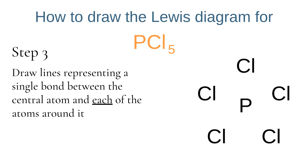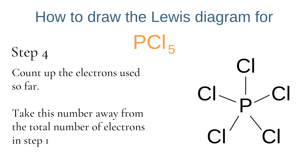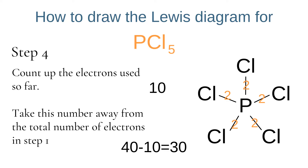The next step is to draw a single line, representing a single bond, between the central atom and each of the surrounding atoms. Each single bond represents 2 electrons. We then count up the number of electrons used so far and subtract this from the total counted in step 1. Because each single line represents 2 bonding electrons, we have 10 electrons used in total. In step 1 we had 40 valence electrons, so 40 minus 10 means there are still 30 electrons left to add to our Lewis diagram.